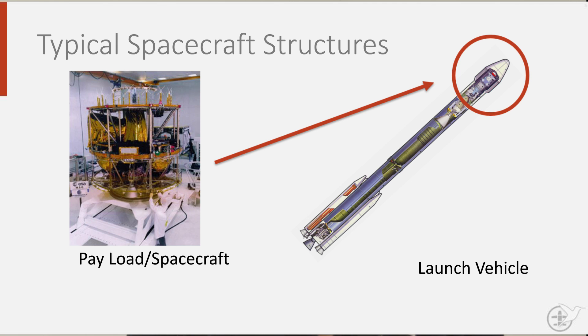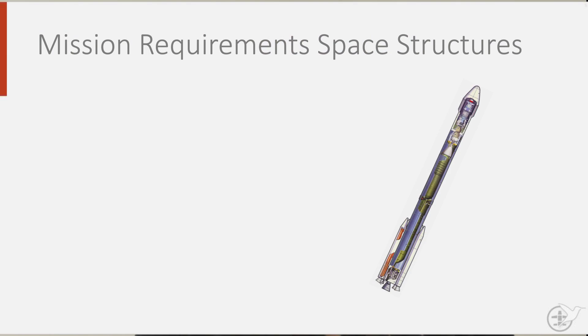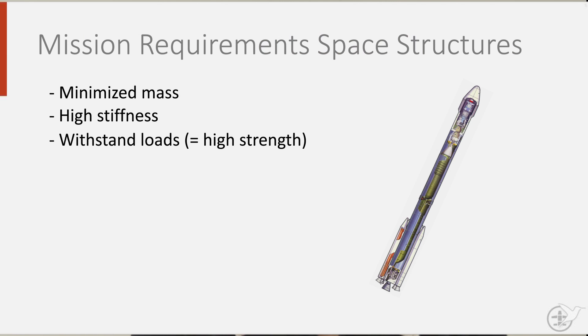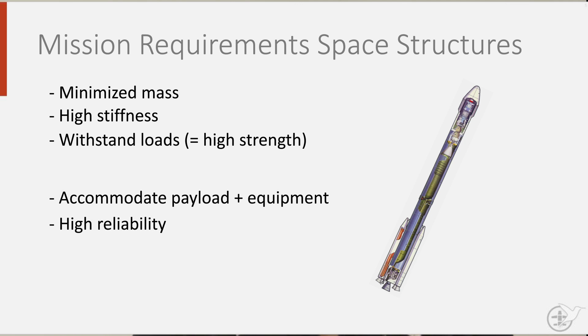In the space industry, the terminology is slightly different. Instead of design requirements, the term mission requirements is used. For spacecraft structures, the following mission requirements are quite common: structures must have a low mass with high stiffness and high strength. The vehicle must also be able to accommodate payload and equipment and must have a very high reliability. Most spacecraft are on a one-of-a-kind mission and carry expensive equipment, making failure a very costly mishap.